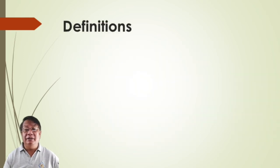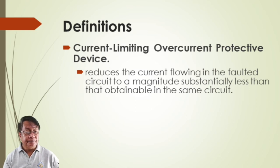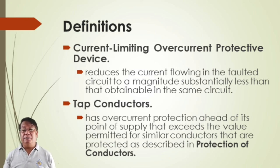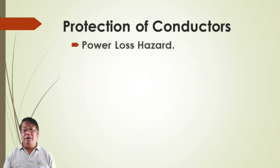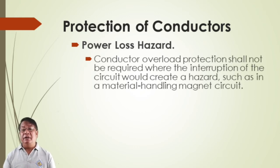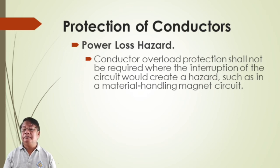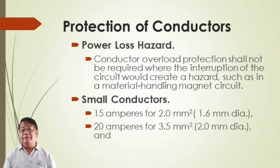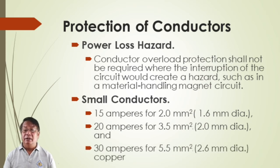A current-limiting overcurrent protective device reduces the current flowing in the faulted circuit to a magnitude substantially less than obtainable in the same circuit. Conductor overload protection shall not be required where interruption of the circuit would create a hazard, such as in material handling magnetic circuits. For small conductors: 15 amperes for 2.3 mm², 20 amperes for 3.5 mm², and 30 amperes for 5.5 mm² — this is for copper.